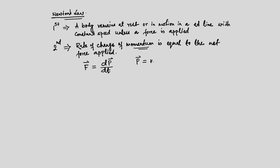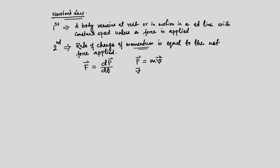Momentum is mass times velocity. Velocity v is defined as the first derivative of displacement s: the limit as delta-t tends to 0 of [s(t + Δt) − s(t)] / Δt. That is the velocity, and now we can put that expression of momentum into the second law.